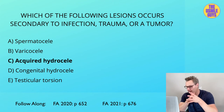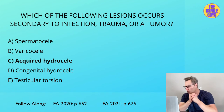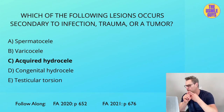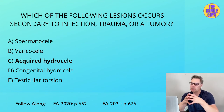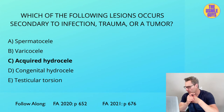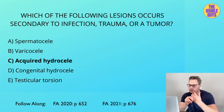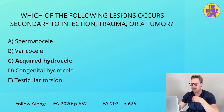An acquired hydrocele is non-communicating and is when fluid collects in the scrotal sac secondary to either infection, trauma, or a tumor. If this is accompanied by blood in the scrotum, we can call this a hematocele. Next up is the spermatocele, characterized by the presence of a cyst due to either a dilated epididymal duct or a rete testis. This is usually filled with cloudy or clear fluid that can contain sperm — thus the name spermatocele.